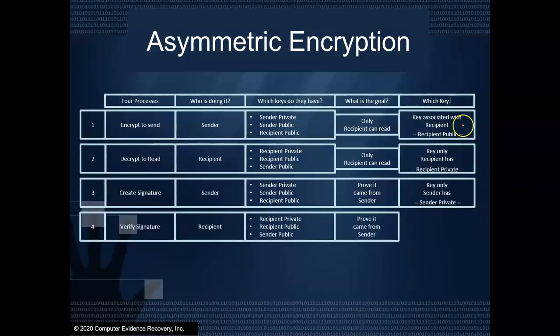And the last thing we want to try to accomplish is to verify the signature that was created. Who's going to do that? The recipient, they want to prove that the person who sent it is really the person who sent it. And so they've got their private key and public key and the sender's public key. The goal is to prove it came from the sender. How are they going to do that? They have to use a key that's associated with the sender. That's going to be the sender's public key.